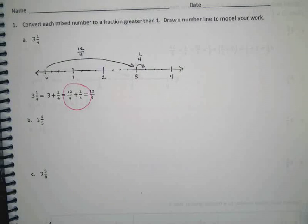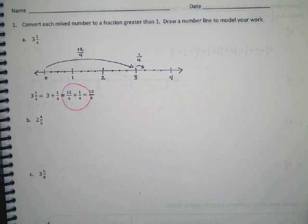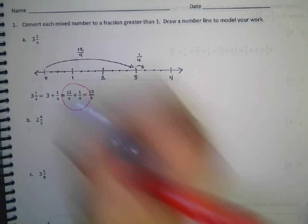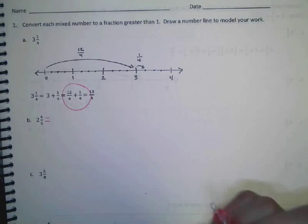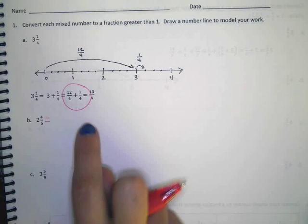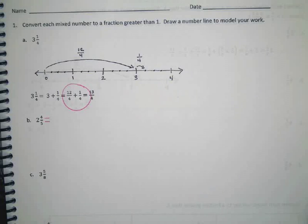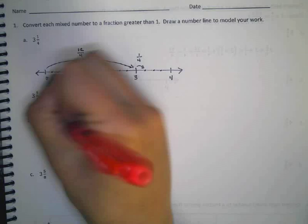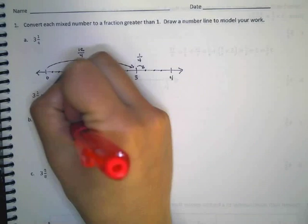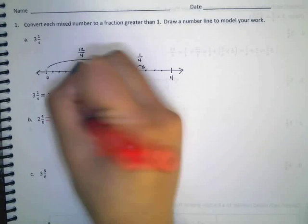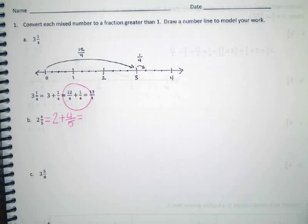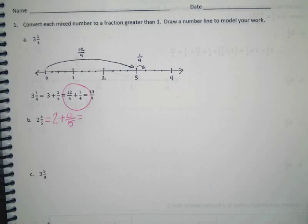Alright, so let's go ahead and do B together. 2 and 4 fifths is equal to what? Look at the example right above if you need a little reminder of where to start. 2 plus 4 fifths. I agree. What does 2 equal in a fraction? 10 fifths.